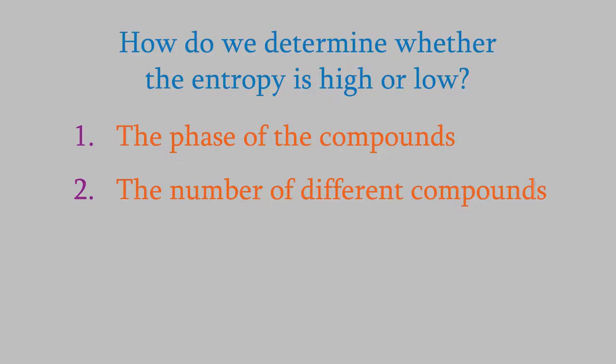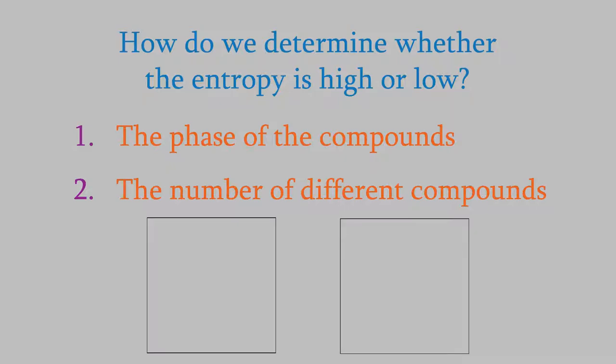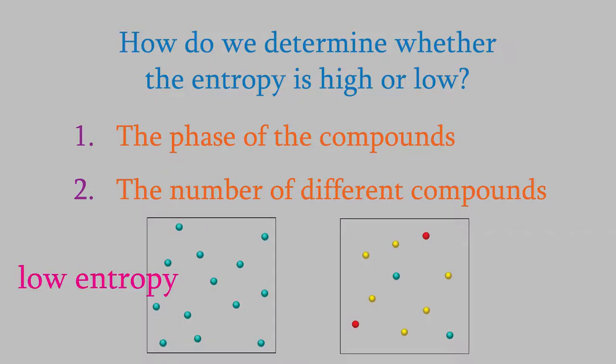Entropy also depends on the number of different compounds present. For example, suppose you had two samples of gas. In one, the gas is made up of only one compound, so every molecule in the gas is the same. The other gas is a sample of three different compounds, and the three kinds of molecule are distributed randomly throughout the gas. If you were to reach into the second container and grab one molecule, you might get any of the three possibilities, but in the first container you'd always get the same kind. That makes the first gas more orderly — it has a lower entropy than the second sample.